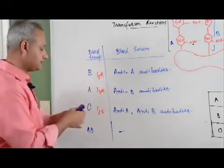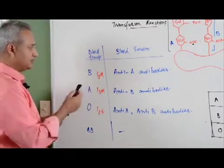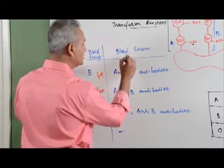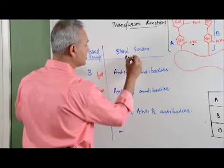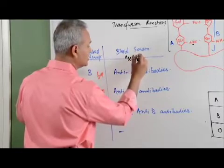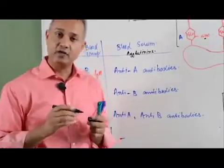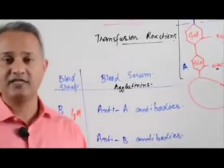Let us see one more thing. These antibodies are called agglutinins. Why? What is agglutination? Agglutination is the clumping of the red blood cells.